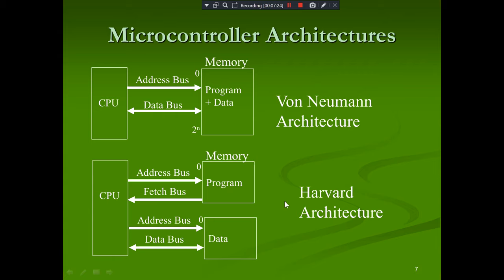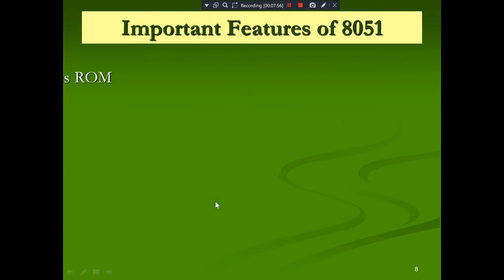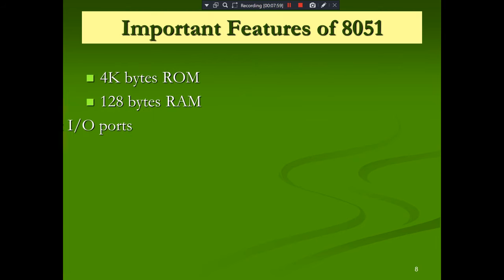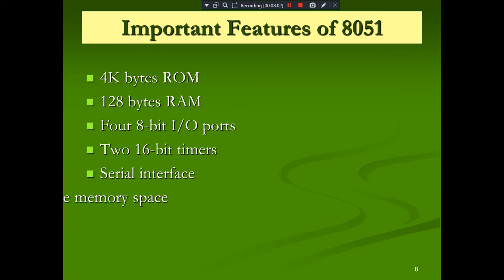In Harvard architecture, the program memory is separated from data memory. Each has its own address bus and data bus connecting to the CPU — a fetch bus for program memory and a bi-directional data bus for data memory. The very important difference: in Von Neumann architecture, program and data are combined; in Harvard architecture, they are separated.